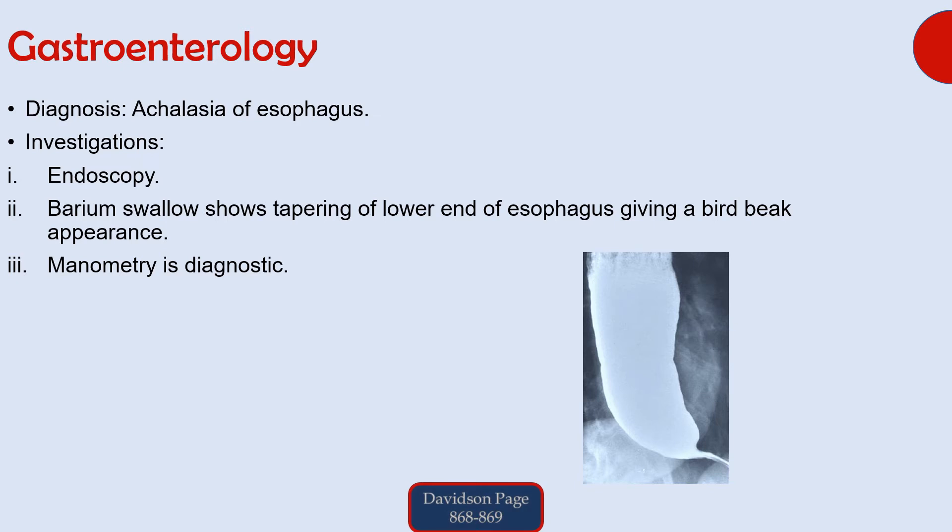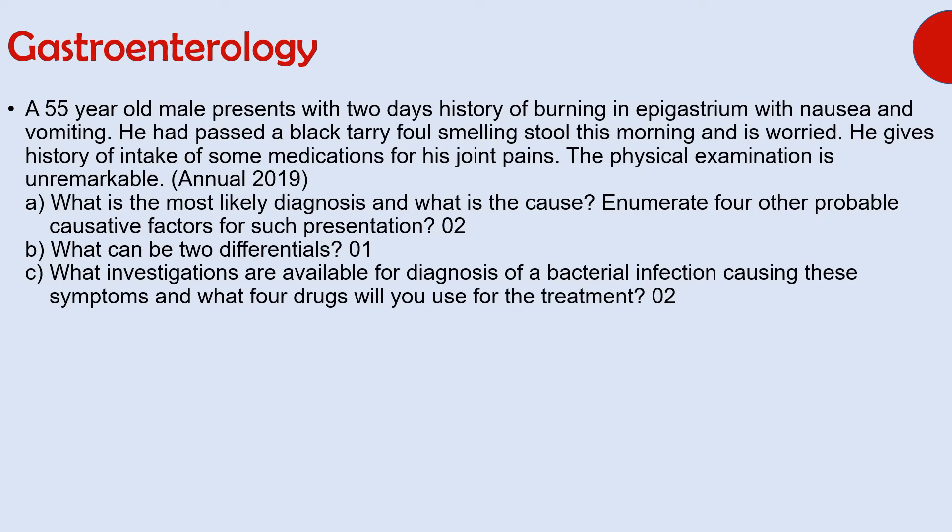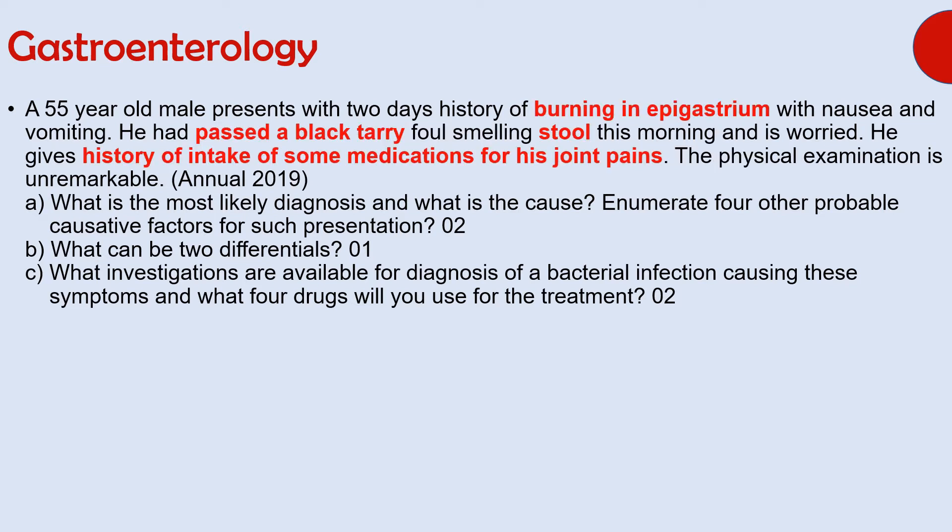Let's read the next question. The diagnosis is peptic ulcer disease. Some important points to lead you towards this diagnosis are burning in the epigastrium, passage of black tarry stools, and history of intake of some medications for joint pains, which are usually NSAIDs — a well-known risk factor for peptic ulcer disease.